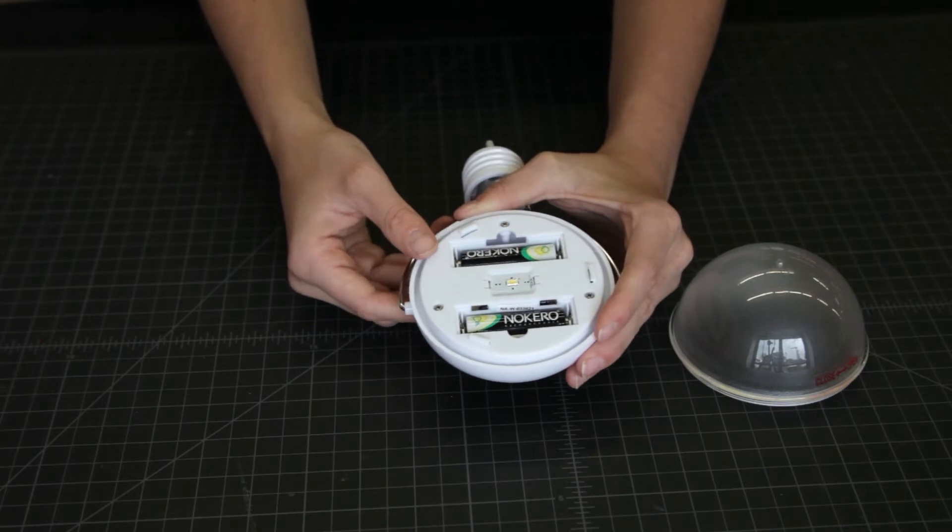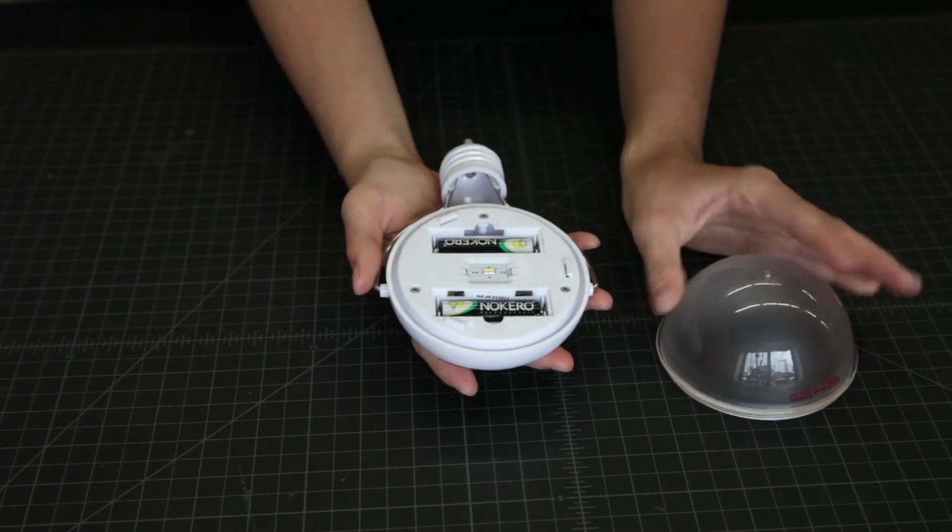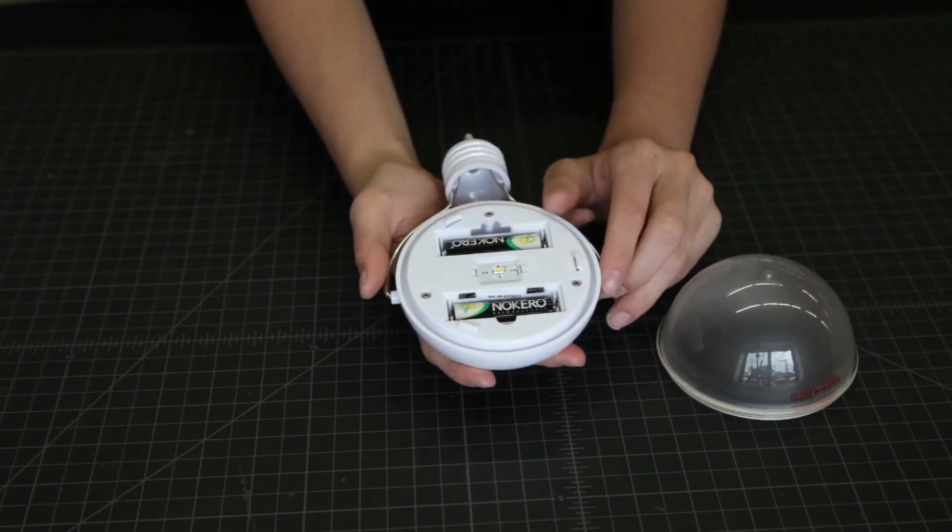Under the removable clear lens, there is an ultra-efficient wide-angle LED that runs for three hours on high or eight hours on low with one-day solar charging.